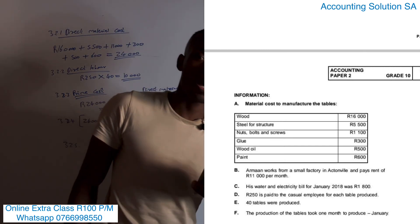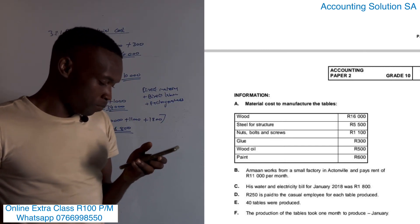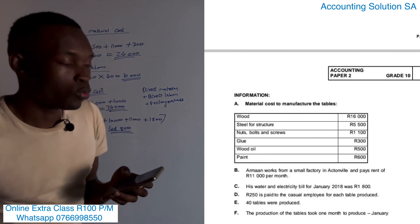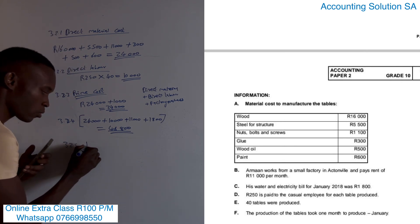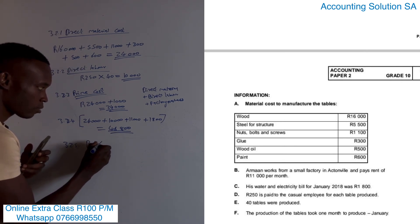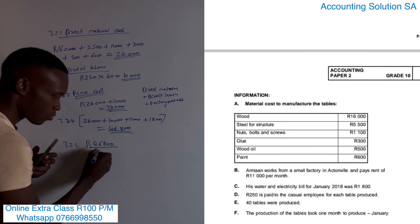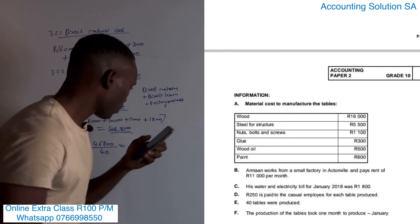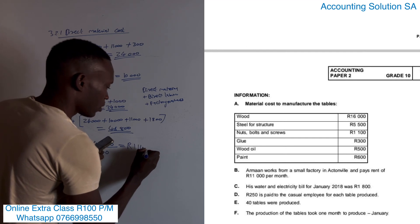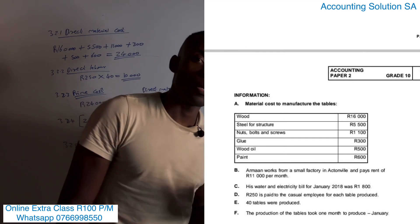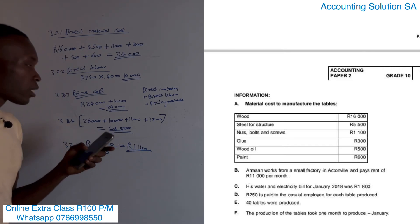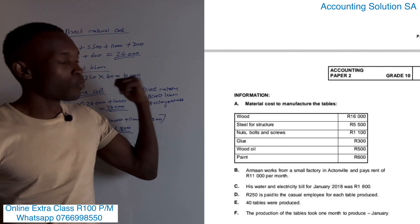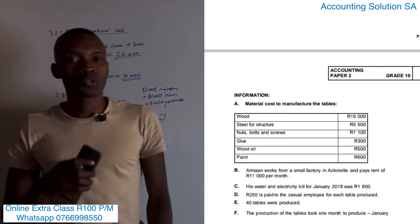This is the most simple chapter you are going to get in accounting. Now they ask us to calculate the cost per unit — the cost of one table. We know that 40 tables cost us R46,800 in total. Because we are looking for the cost of one table, we divide by the number of units produced, which is 40, and we get R1,140 per unit. That's everything you need to get correct in this chapter.